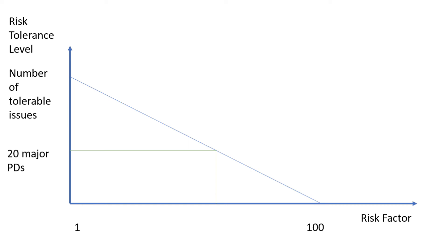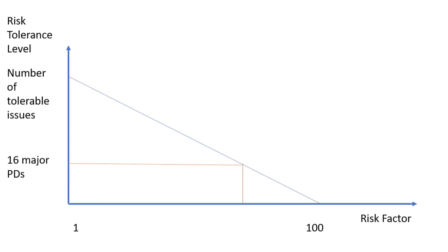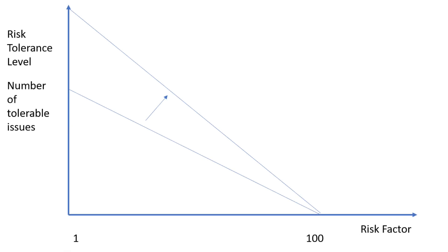However, if your project management team only learns about these 20 major protocol deviations at that point, it might already be too late. So you want to be alerted when you reach 80% of that limit — in our example, your tolerance limit would be set at 16 cases. Now the question: what would change in the relationship between the same key risk factor and the tolerance limit in a phase 4 study with 1,000 patients? Exactly — your tolerance limit would increase, meaning you can live with more protocol deviations, and you don't need to worry after 16 cases but much later.